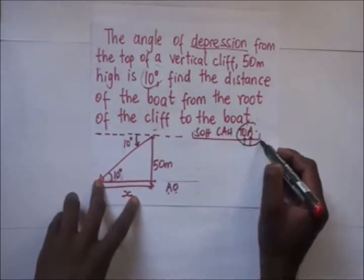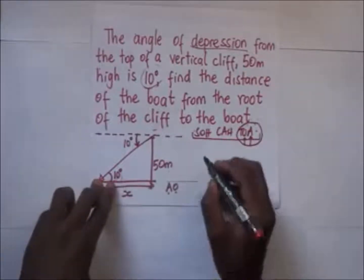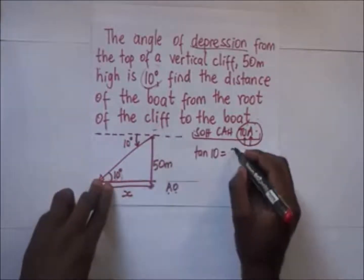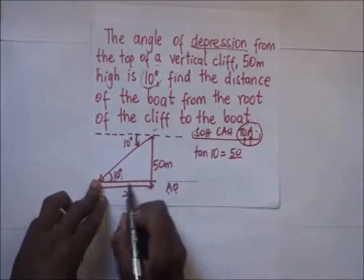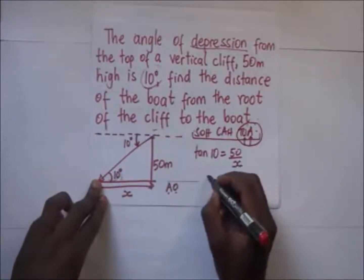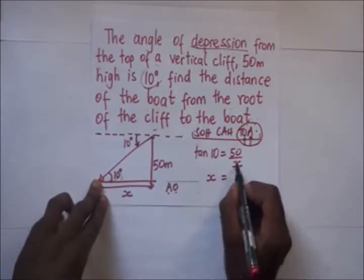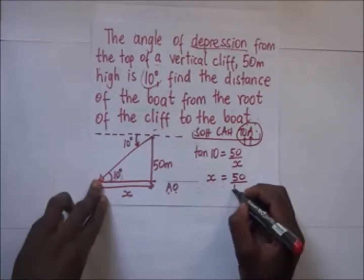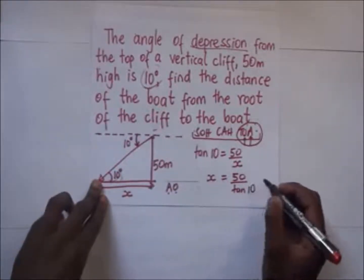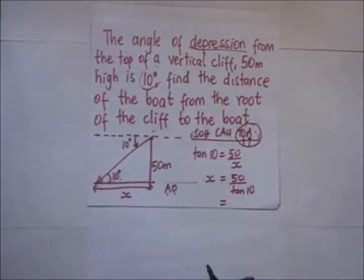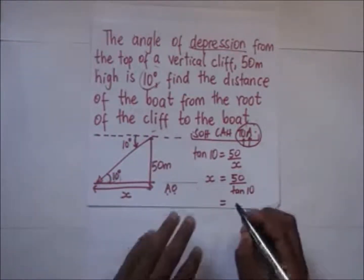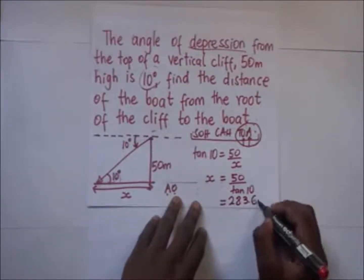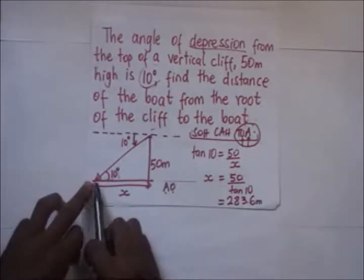We are going to use tan. So tan(10°) = opposite over adjacent = 50 over x. Making x the subject: x = 50 over tan(10°). When we compute that, our value of x is 283.6 meters, and that is the distance of the boat from the root of the cliff.